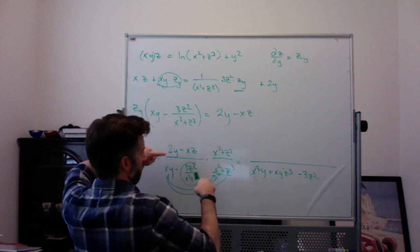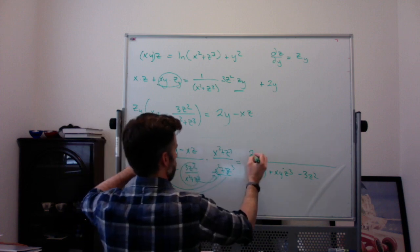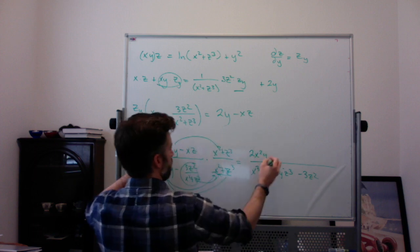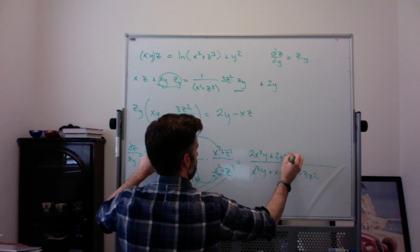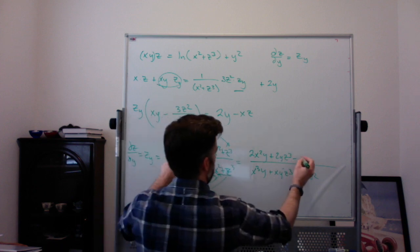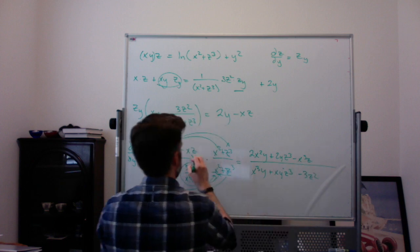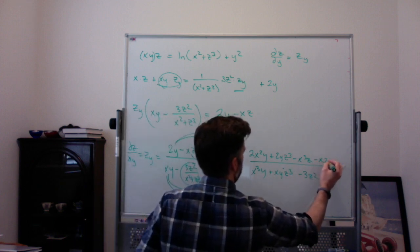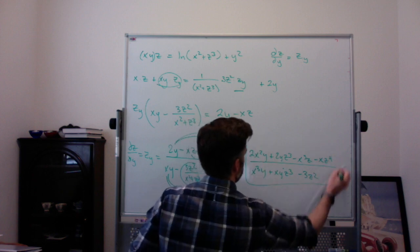And then, on top, you have to follow that. So, you get 2yx² or 2x²y. You get 2yz³. That's not there. You get minus xz times x² is minus x³z. And minus xz times z³ is minus xz⁴.